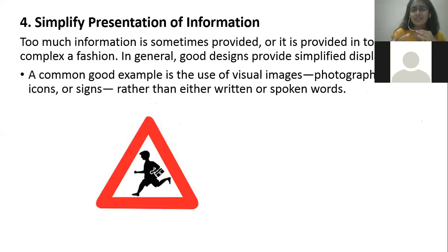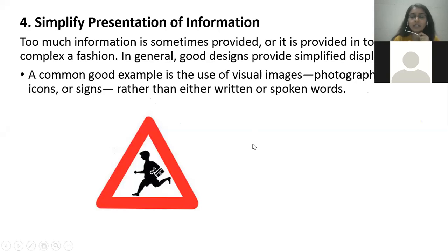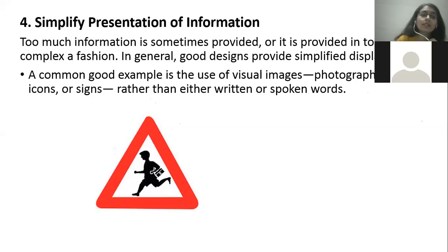The fourth cognitive principle is to simplify the presentation of information. Do not use excessive amounts of words or written material. For example, comparing two signboards: one with a long written message saying 'there is a school ahead, go slow' versus a pictogram of a schoolboy with a bag and a red sign. While driving, you will likely miss the written words but the pictogram will catch your eye immediately. Use photographs or icons rather than written or spoken words.